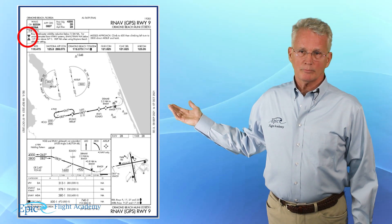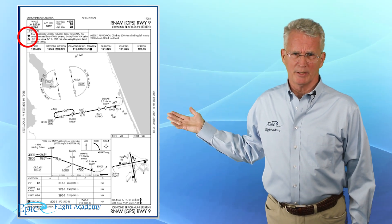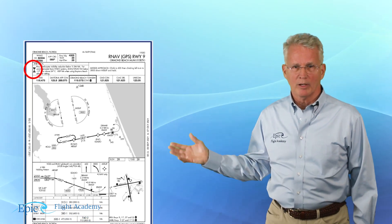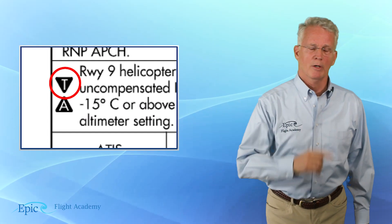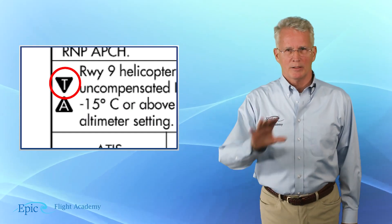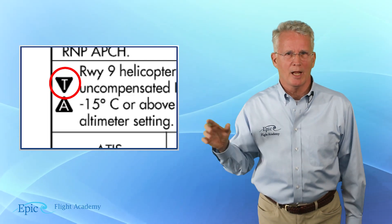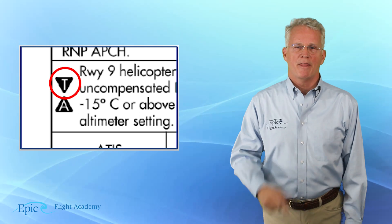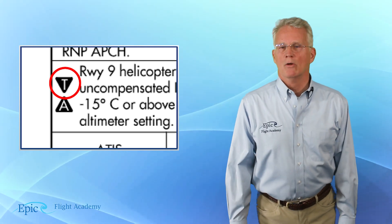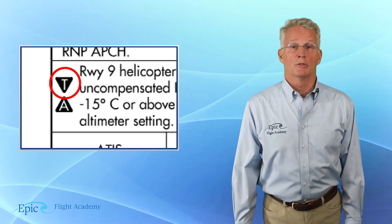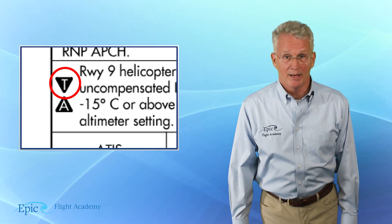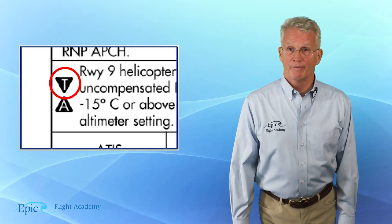I want you to start by looking at this approach plate. On the approach plate, you can see if you look closely in the upper left-hand corner, this black triangle with the letter T in it. That is an indicator for non-standard departure information.